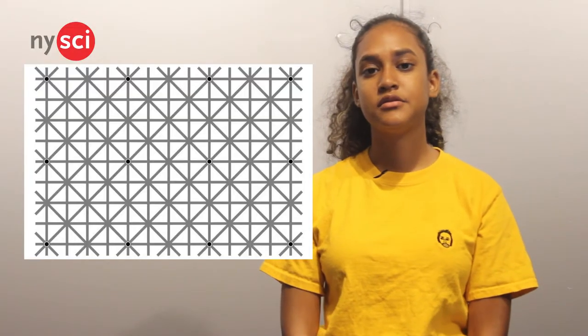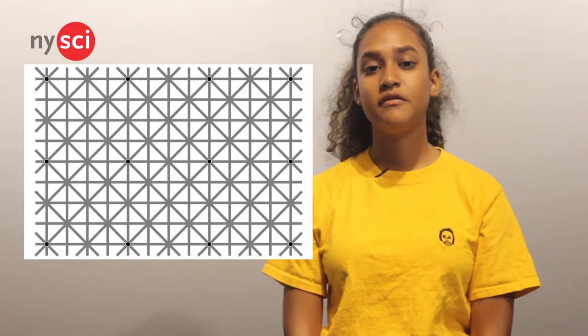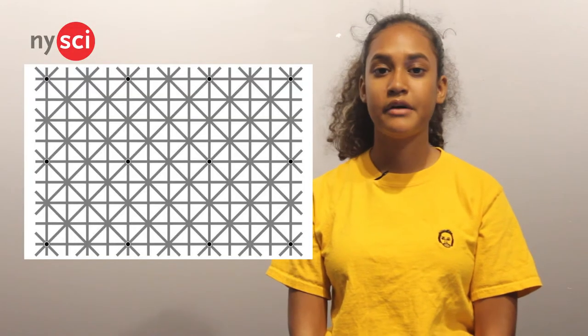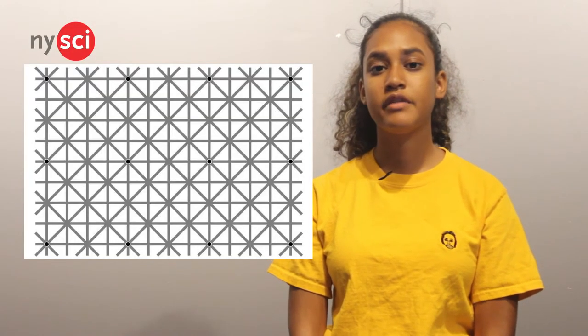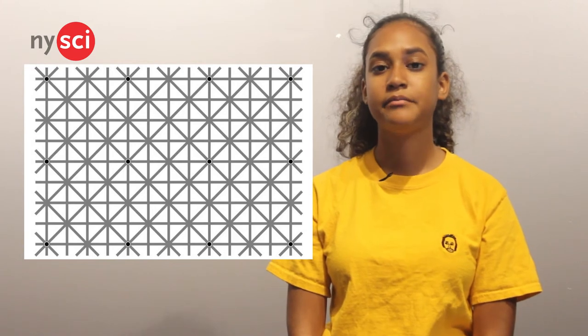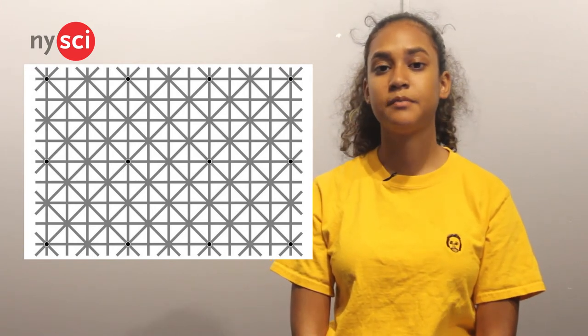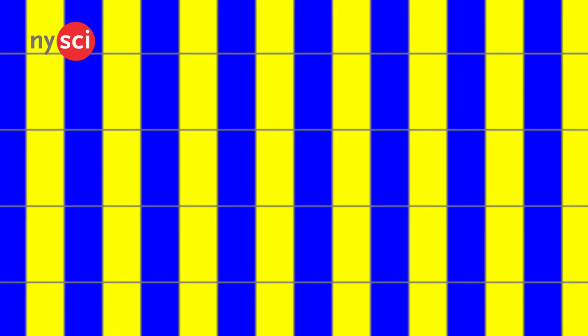Take a look at this optical illusion. There are 12 black dots in this image, but your brain won't allow you to see all 12 of them at the same time. You can try, but your brain is trained to use something called lateral inhibition. When a neuron in your brain becomes excited, it blurs the activity of the surrounding neurons, allowing the excited neurons to respond strongly.